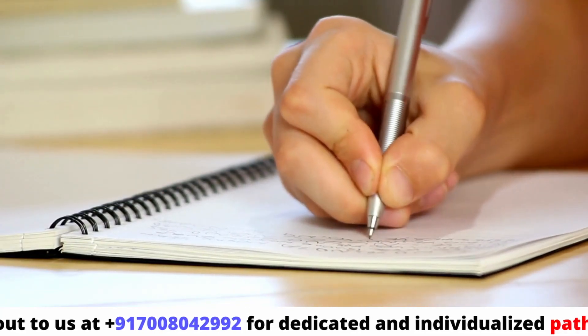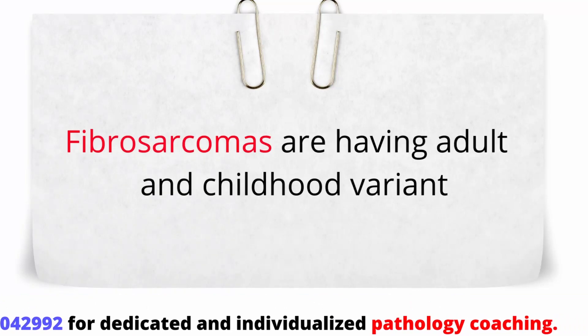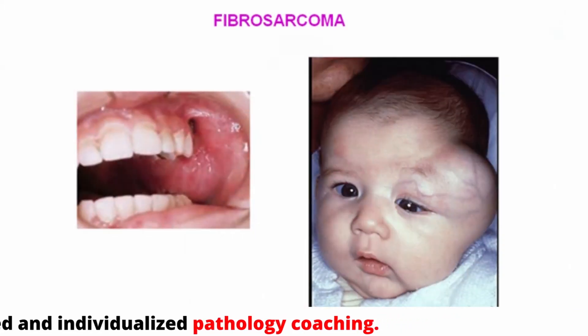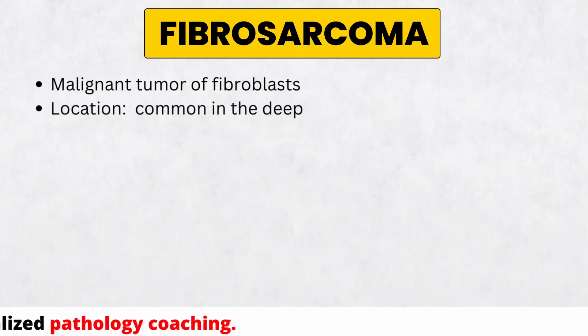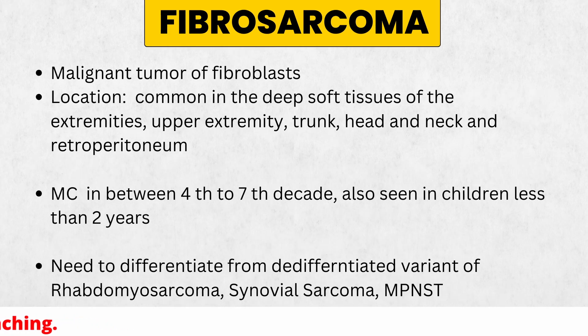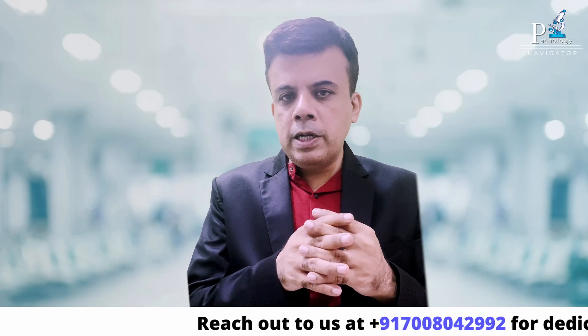Fibrosarcoma is a tumor found in both adults and children, with some differences between the adult and childhood variants. As a pure entity, fibrosarcoma may be rare. It may be a myofibroblastic sarcoma, or it may be a de-differentiated form of various other malignant tumors — initially thought to be fibrosarcoma but later found to be de-differentiated variants of liposarcoma, malignant peripheral nerve sheath tumor, synovial sarcoma, and other malignant spindle cell entities.